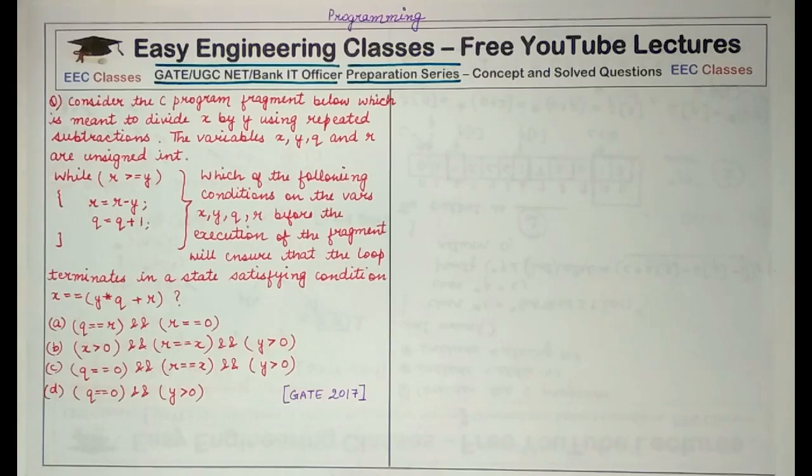The code that is given to you is: while R is greater than equal to Y, R is equal to R minus Y and Q is equal to Q plus 1.